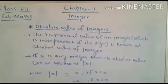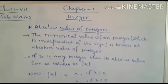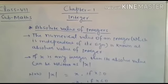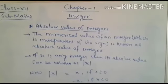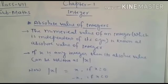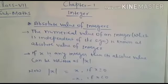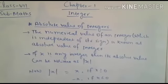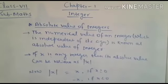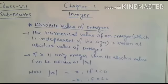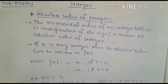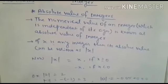So it means the negative sign is not included. Let us understand the mathematical language of absolute value of integers. If x is any integer, then its absolute value can be written as the modulus of x, written as |x|.